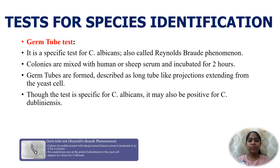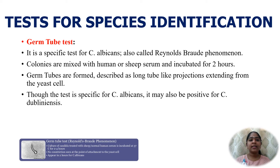For species identification, the germ tube test is a specific test for Candida albicans, also known as the Reynolds-Braude phenomenon. Colonies are mixed with human or sheep serum and incubated for two hours, after which a wet mount preparation is examined under the microscope. Germ tubes are described as long tube-like projections extending from the yeast cells, differentiated from pseudohyphae by the absence of constriction at the origin. Though specific for C. albicans, the test may also be positive for C. dubliniensis.